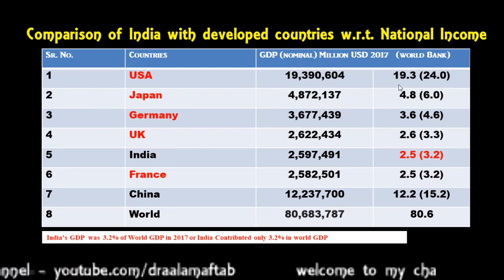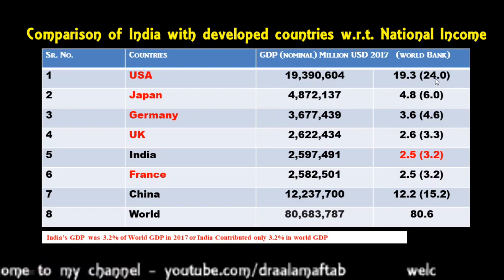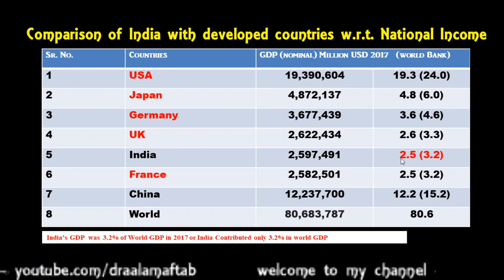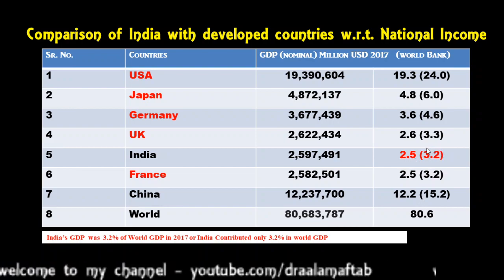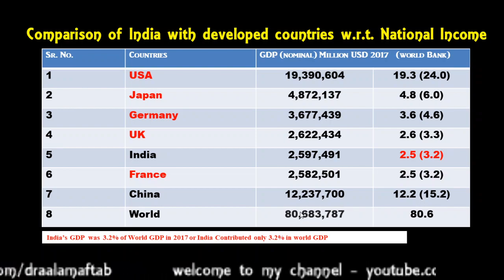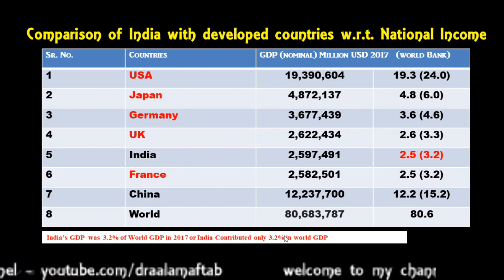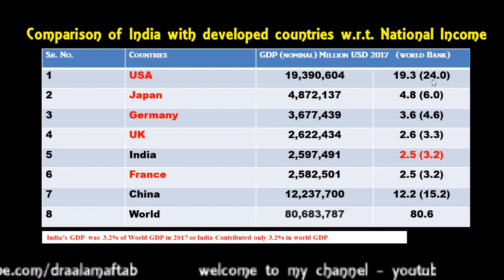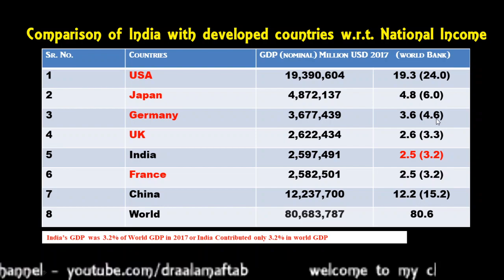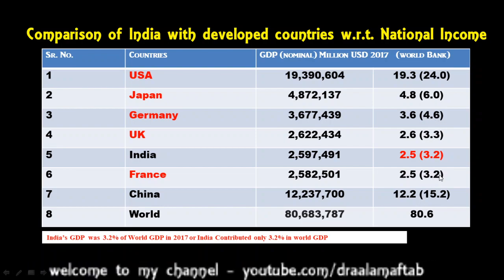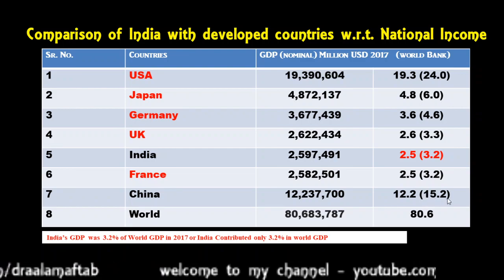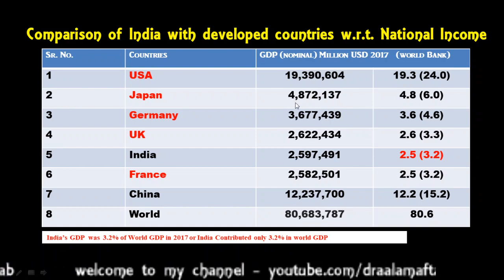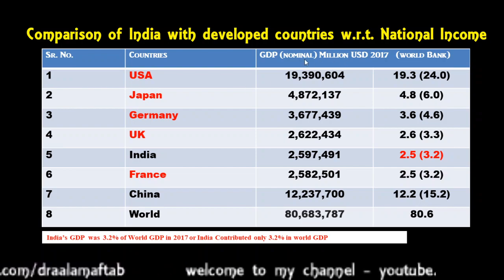If you see the values in brackets: India's national income was 2.5 trillion dollar, which was 3.2 percent of total world GDP, meaning India was contributing 3.2 percent in the world GDP, whereas USA contributed 24 percent, Japan contributed 6 percent, Germany 4.6 percent, UK 3.3 percent, France 3.2 percent, and China contributed 15.2 percent to the world GDP of 80.6 trillion dollars. This comparison is with respect to national income in nominal term.